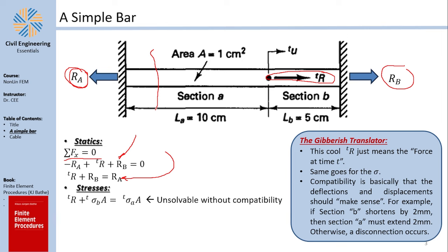You know that the force inside A relates to the stresses inside A, and the force inside B relates to the stresses inside B. You can replace the force in B with stress multiplied by area, since sigma equals force over area. Sigma_A multiplied by area gives the force in A; sigma_B multiplied by area gives the force in B.